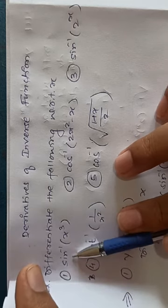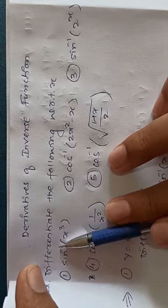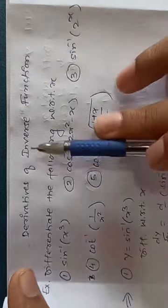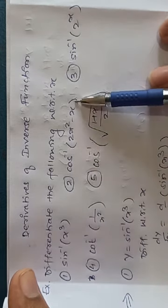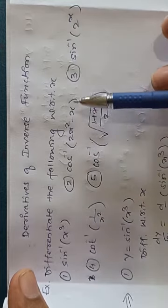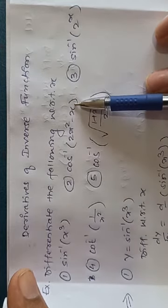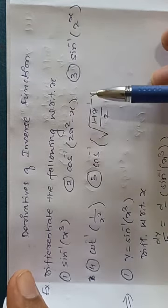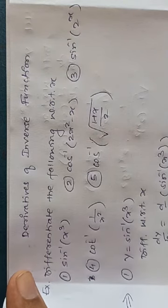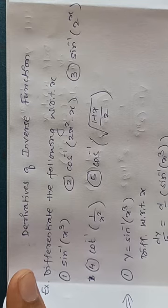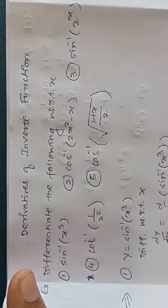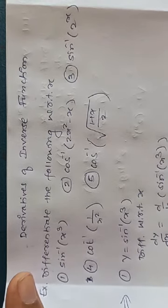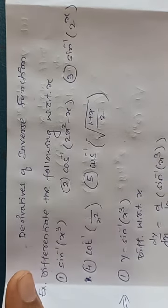Look, how many functions are here? Here is sin inverse, and there is x cube - two functions. Here is cos inverse and 2x square minus x - that's again two, three functions in between. You should notice this. I've already told you - composite functions are the most important part of derivatives.